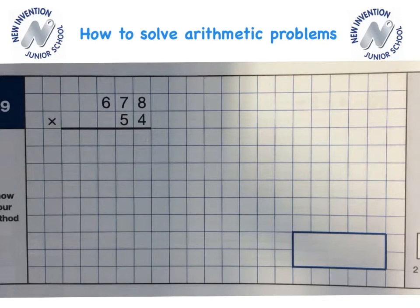As with the previous example, I'm going to multiply this 3 digit number by a 2 digit number by simply partitioning the 2 digit number on the bottom into 50 and 4. So to begin with, we're going to multiply 678 by 4.